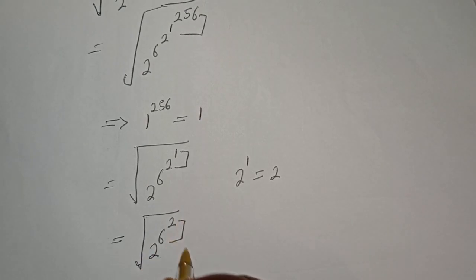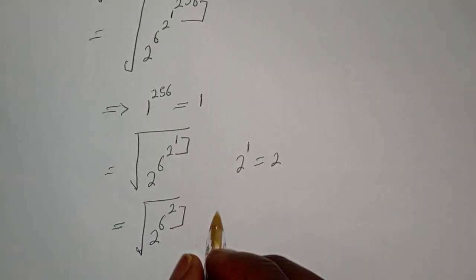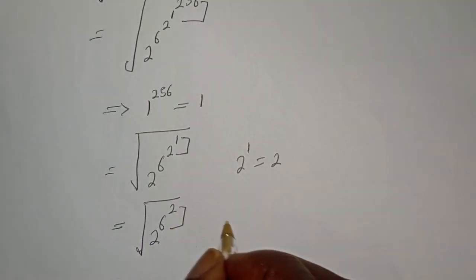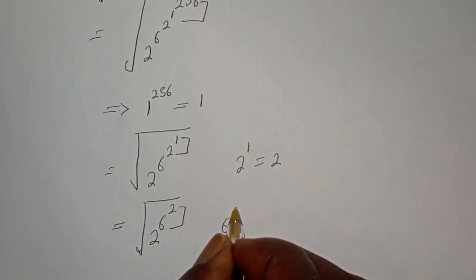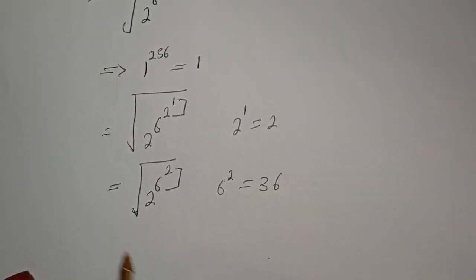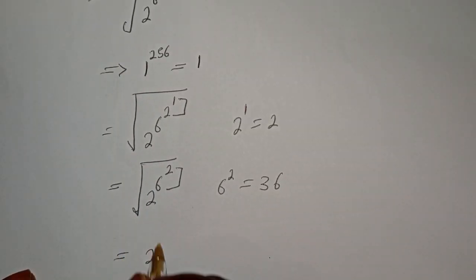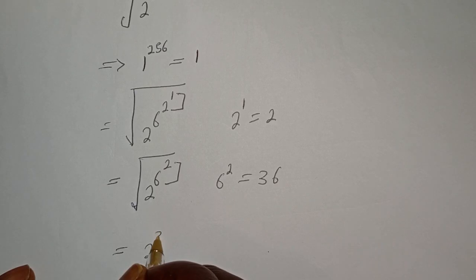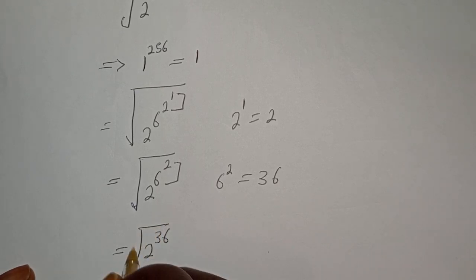Let's work with this exponent again. 6 raised to power 2 is equal to 36. So this becomes the square root of 2 raised to power 36.